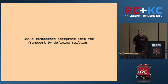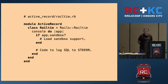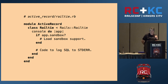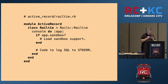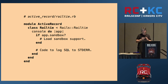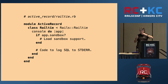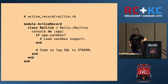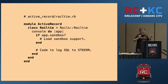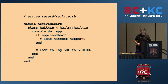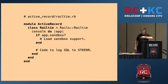Rails components are integrated into the framework using railties. For instance, this is the railtie of ActiveRecord. ActiveRecord defines a railtie to integrate into the framework. This is the hook that tells Rails to run code if the console is launched — specifically, if it's launched in sandbox mode, which starts a transaction and rolls it back when the session is over. There's also code that logs SQL to standard error in the console. That's how ActiveRecord integrates into Rails via its railtie.